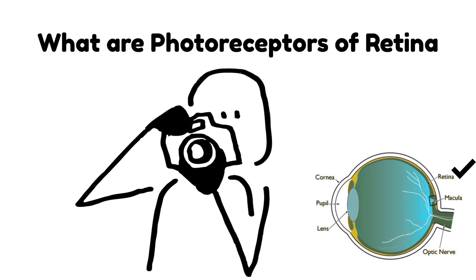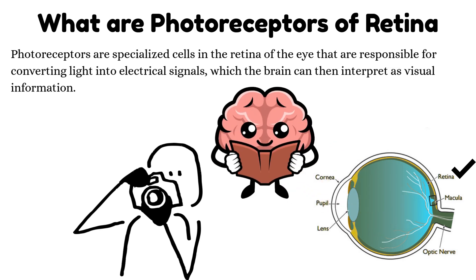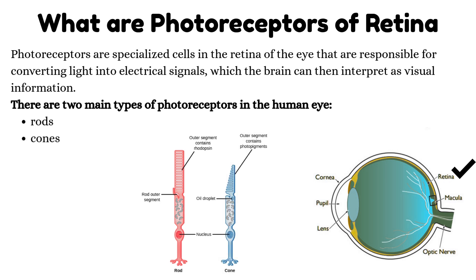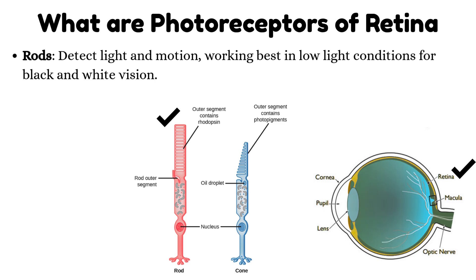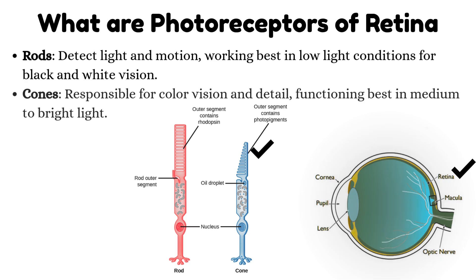What are photoreceptors of retina? Photoreceptors are specialized cells in the retina responsible for converting light into electrical signals, which the brain can then interpret as visual information. There are two main types: Rods and Cones. Rods detect light and motion, working best in low-light conditions for black and white vision. Cones are responsible for color vision and detail, functioning best in medium to bright light.